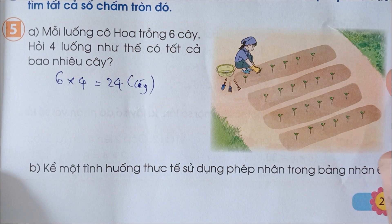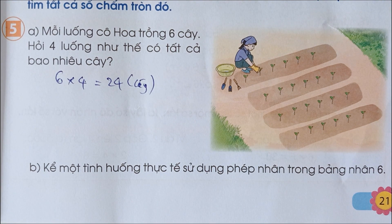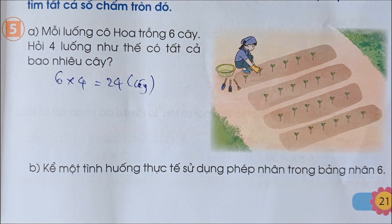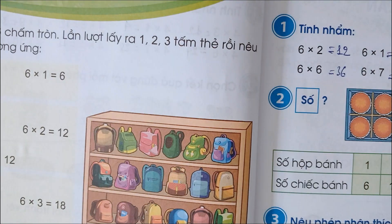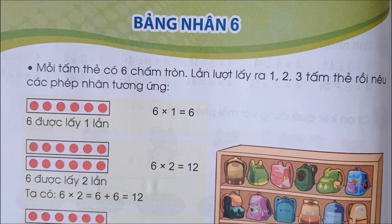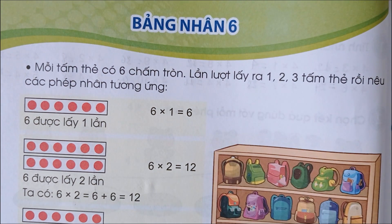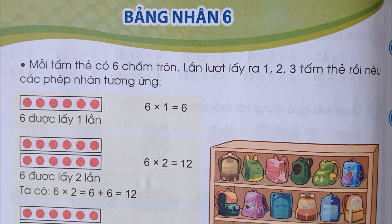Kể một tình huống thực tế sử dụng phép nhân trong bảng nhân. Ví dụ: mỗi ghế ngồi có 6 người, mỗi 5 ghế ngồi như vậy có bao nhiêu người? Như vậy các em học sinh lớp 3 thân mến, bài học bảng nhân 6 trong sách giáo khoa toán lớp 3 cánh diều đến đây là hết rồi nghe các em. Xin chào tạm biệt các con, bye bye!